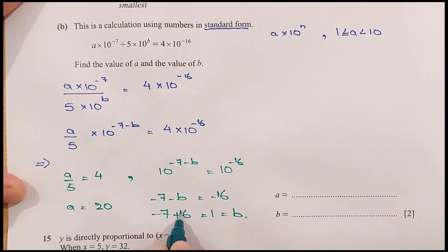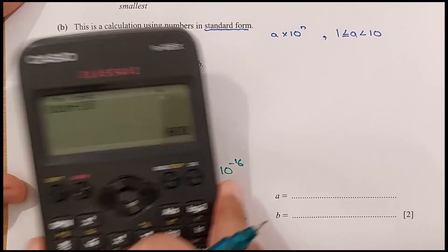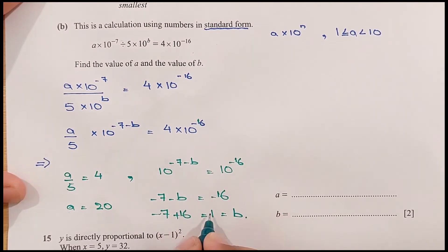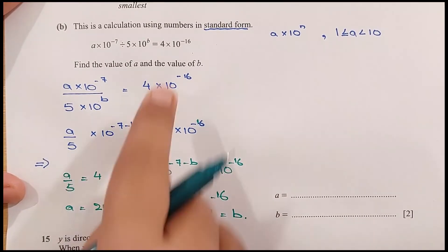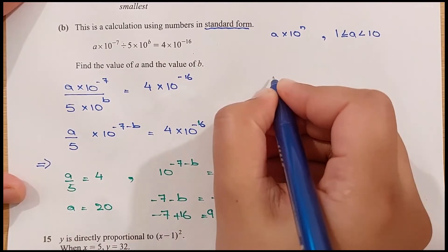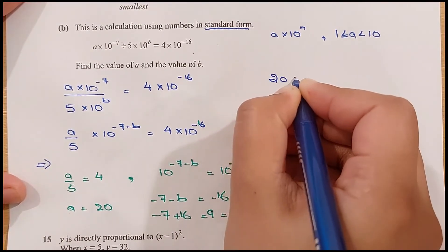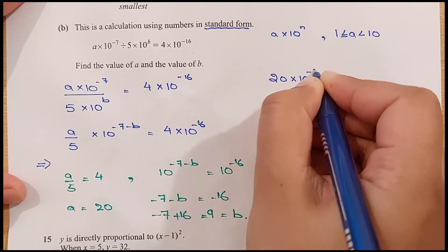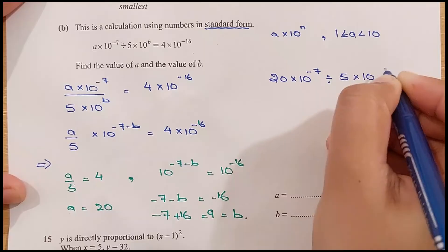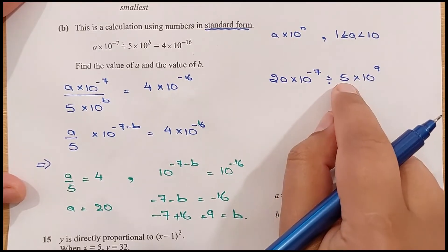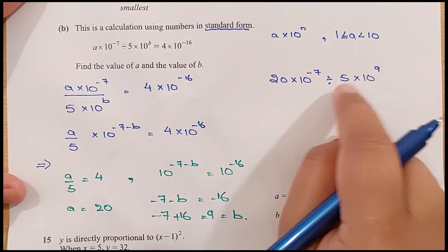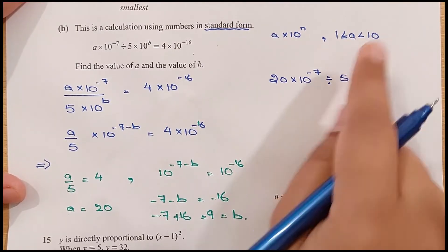So we have minus 7 minus B equals minus 16. That gives us 16 minus 7 equals 9, so B equals 9. Now substituting back: A is 20 times 10 exponent minus 7, divided by 5 times 10 exponent 9. We can see 5 times 10 exponent 9 is in standard form since 5 lies between 1 and 10.